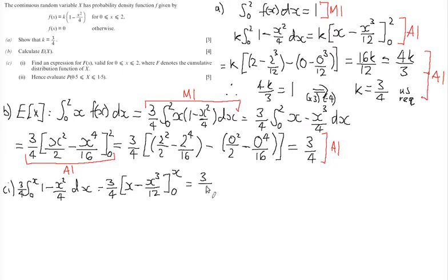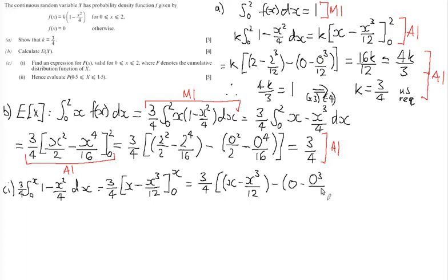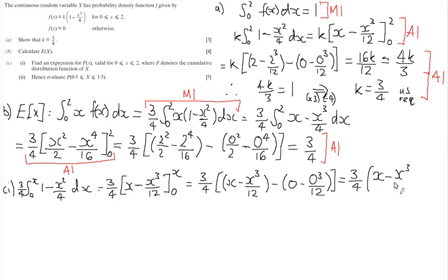Substituting the bounds, we get three quarters multiplied by (x minus x cubed over 12), minus (0 minus 0 cubed over 12). The lower bound evaluates to 0, so F(x) = three quarters times (x minus x cubed over 12).